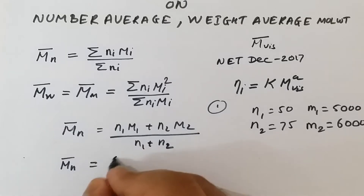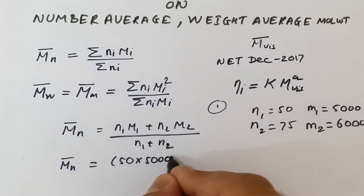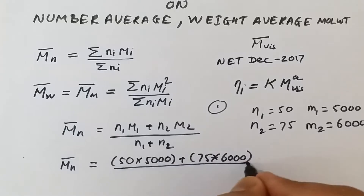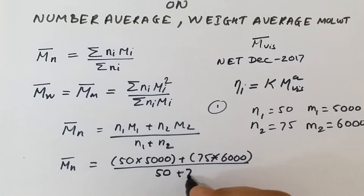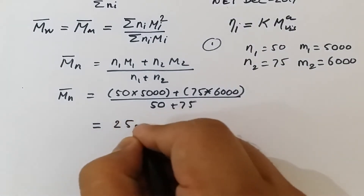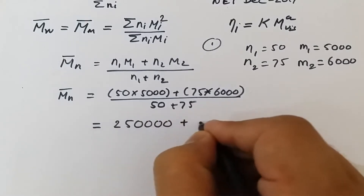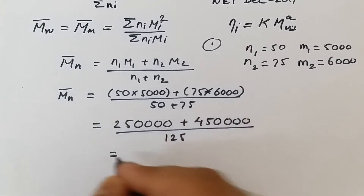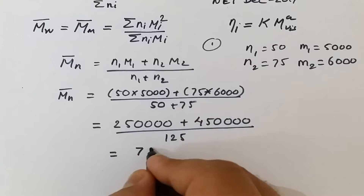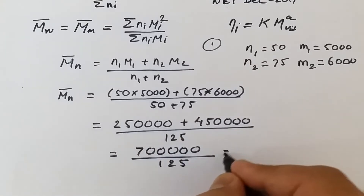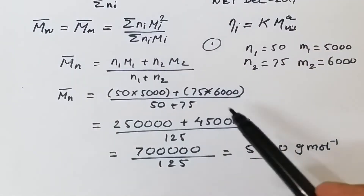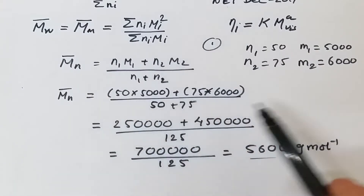Substituting the values: 50 × 5000 + 75 × 6000, divided by 50 + 75. That gives us 250000 + 450000 = 700000 divided by 125, and the answer comes out to approximately 5600 grams per mole. This is very simple — you just carry out multiplication and division to calculate the number average molecular weight.